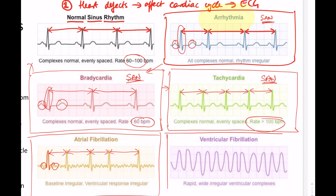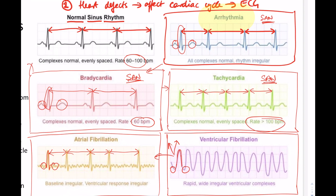Finally, ventricular fibrillation: there is a lot going on here. The P wave cannot be identified, the T wave cannot be identified, and the QRS complex — while the ventricles are contracting — does not look like a normal QRS complex compared to the other conditions. The spacing between QRS complexes is also much shorter than in other conditions, indicating clear misfunctioning of the ventricles. In summary: identify the main differences from normal sinus rhythm, and attribute those differences to whichever part of the heart is not functioning properly.